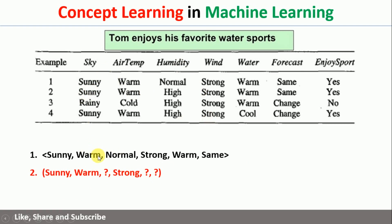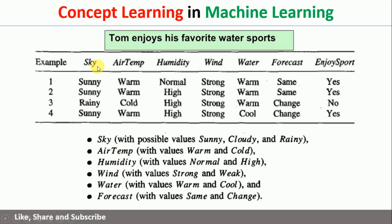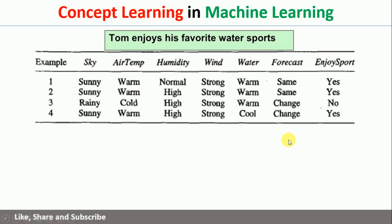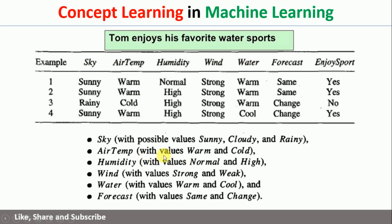You may ask: how can we write these particular solutions? To write them, we need to know what are the possible values for each and every attribute. For example, sky can take different values like sunny, cloudy, and rainy. If I write sunny in the first place in the solution, it will accept only sunny. If I write cloudy, it will accept only cloudy. Similarly for the remaining attributes.